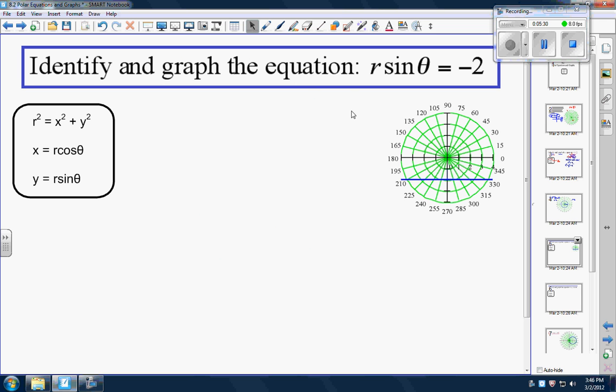Next one. Identify and graph equation r sine theta equals negative two. So we look over here at our three main formulas see if there's anything we can do. So r sine theta r sine theta right there. This guy is as easy as saying anywhere I see an r sine theta I know that's a y. Y equals negative two.